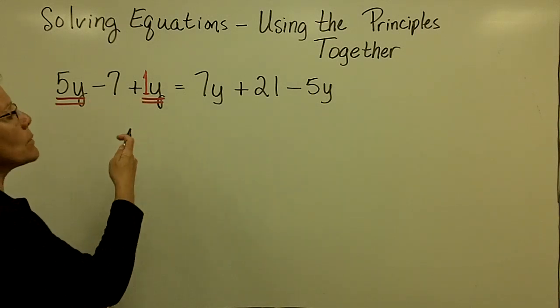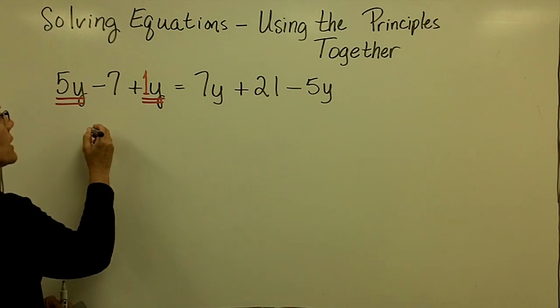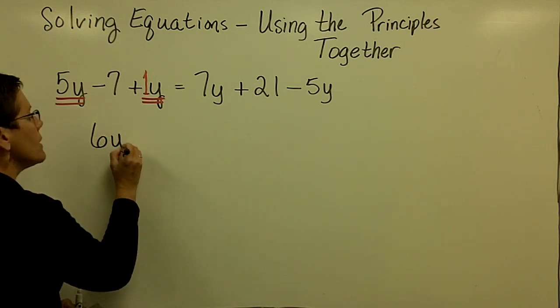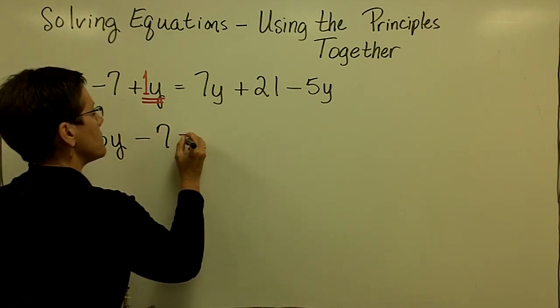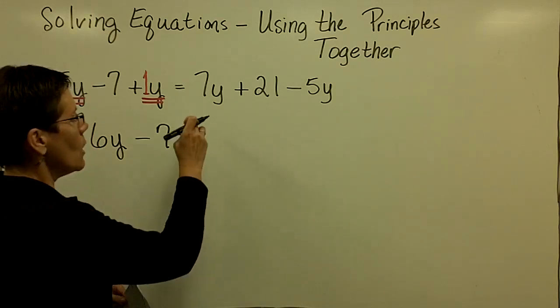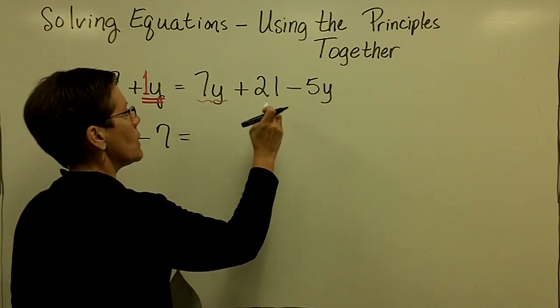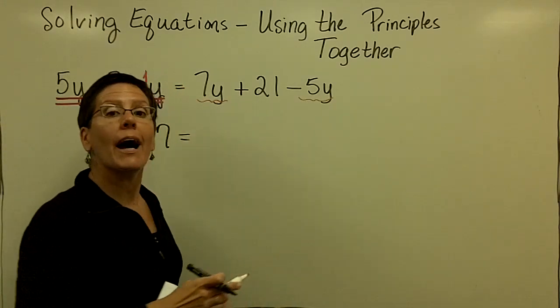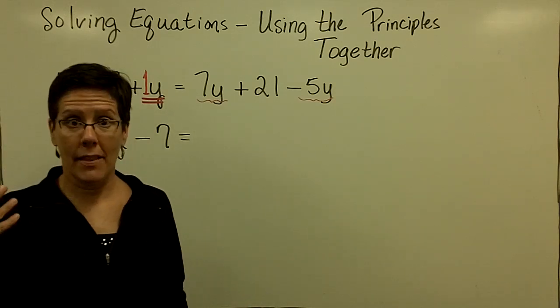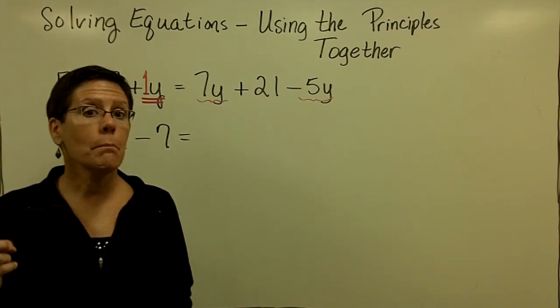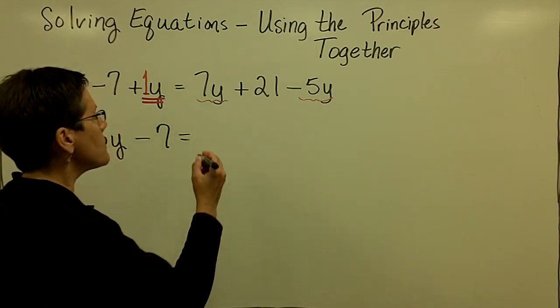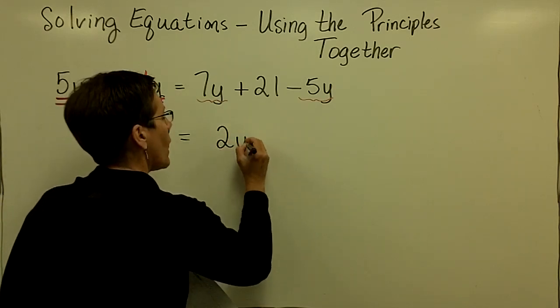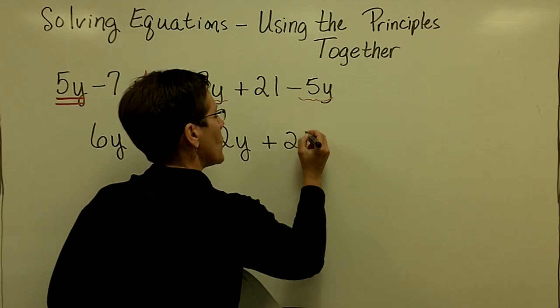So the 5y and the 1y on this left-hand side are equal to a total of 6y and then I had that minus 7. Over here, I have a 7y and a minus 5y that are like terms. They must be combined. 7 minus 5 is 2 of those y's, so I have 2y plus the 21.